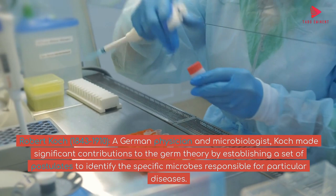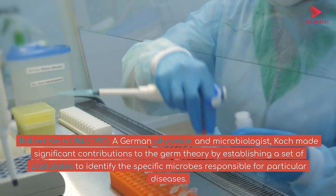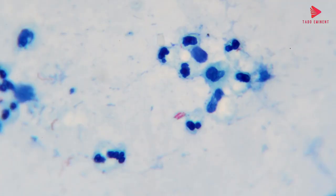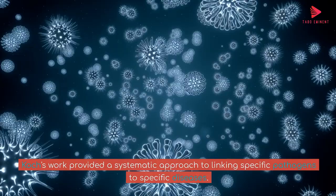Robert Koch, 1843–1910, a German physician and microbiologist, made significant contributions to the germ theory by establishing a set of postulates to identify the specific microbes responsible for particular diseases. He applied these postulates to identify the bacteria causing anthrax and tuberculosis. Koch's work provided a systematic approach to linking specific pathogens to specific diseases.